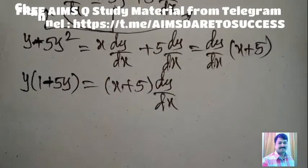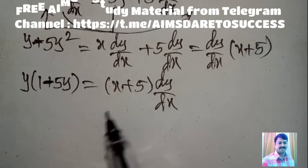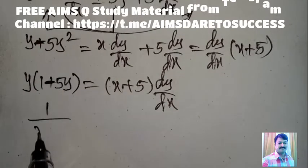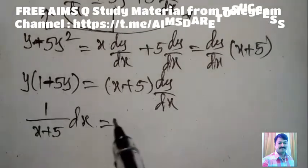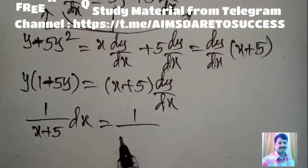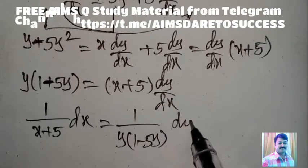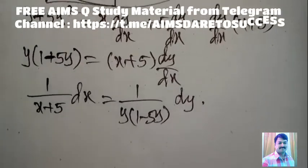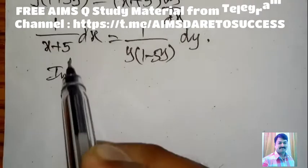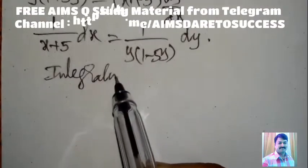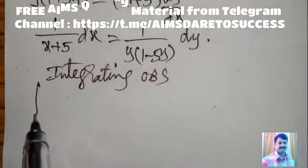Separating variables — y terms on one side, x terms on the other side. dx over (x + 5) = dy over [y(1 − 5y)]. So we have successfully separated the variables. Now apply integration on both sides.